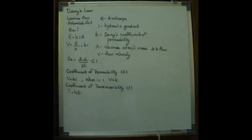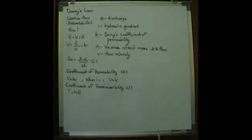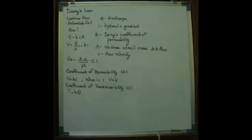T is equal to K into B, where B is the aquifer thickness. The coefficient of transmissibility is defined as the rate of flow of water through a vertical strip of aquifer of unit width, extending the full saturation height under unit hydraulic gradient at a temperature of 60 degrees Fahrenheit.